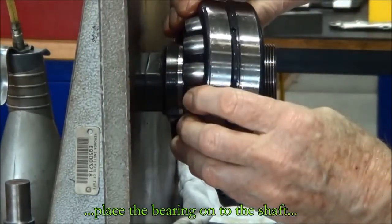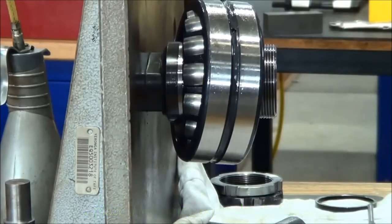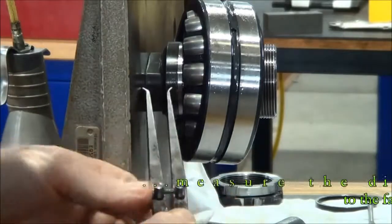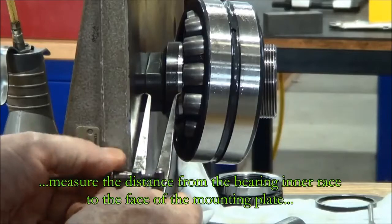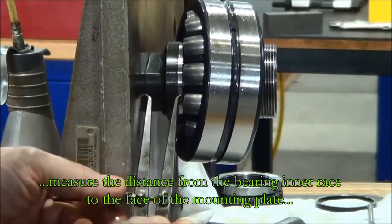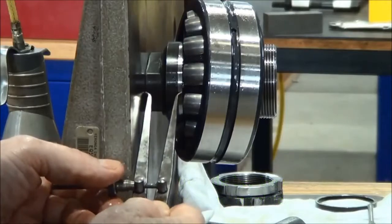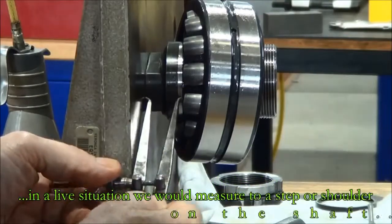Then what we do is we take a measurement from the inner race, in this case to the fitting plate that we're using there, as you can see with the dividers. If we were doing it on a live piece of machinery, we would probably be taking the measurement from the inner race to a shoulder or something like that on the shaft.